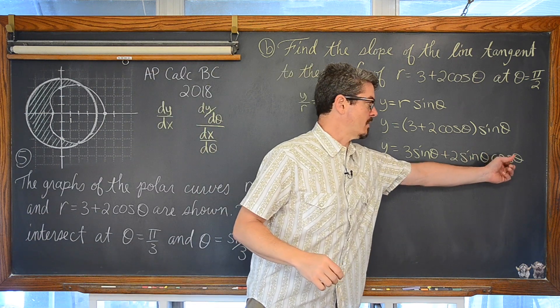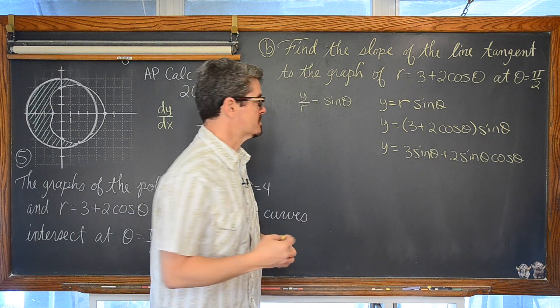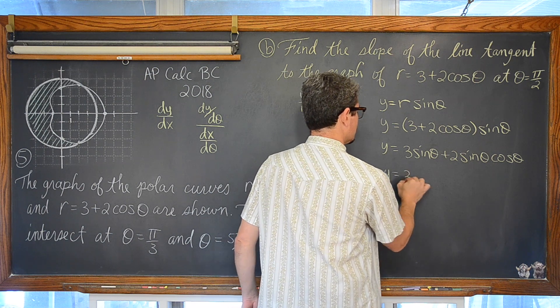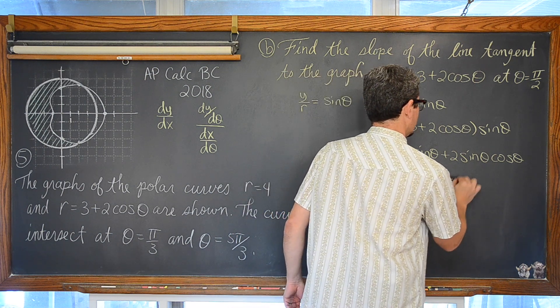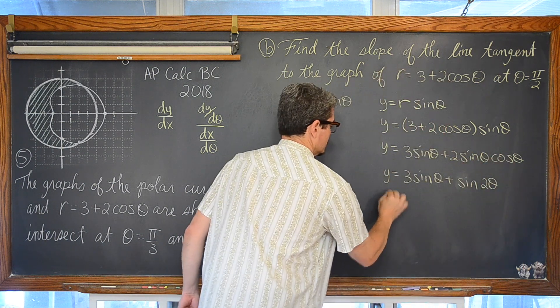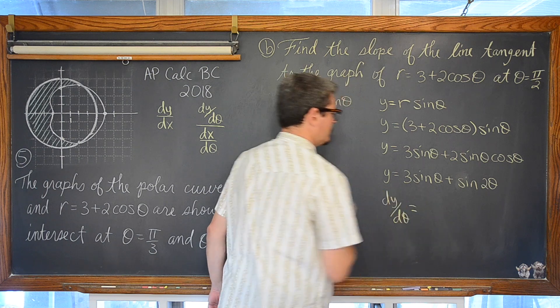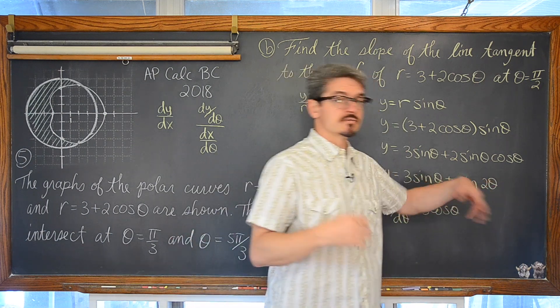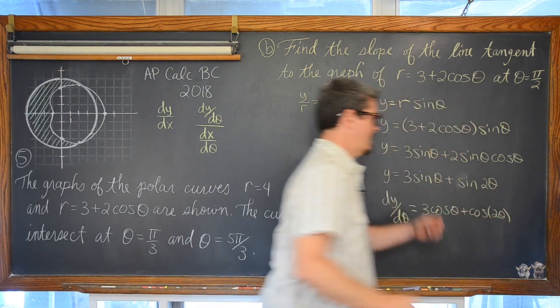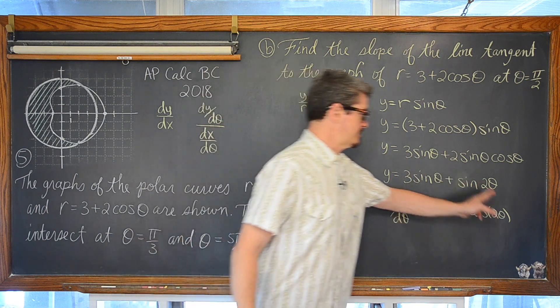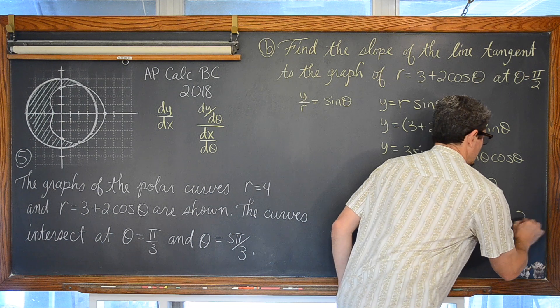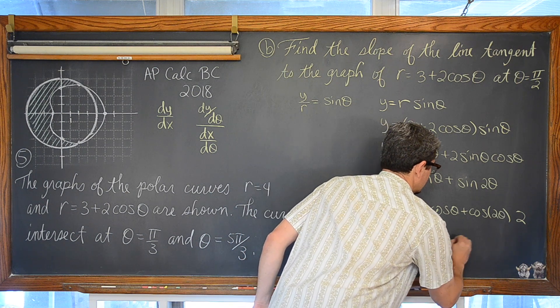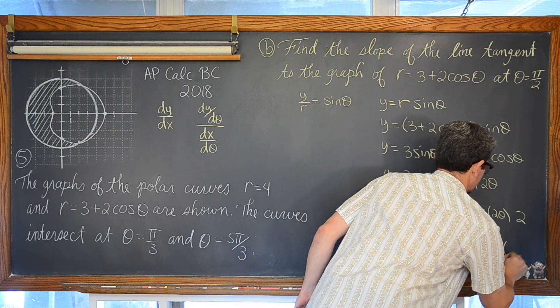We can go ahead and write that as a double angle identity so we don't have to use the product rule as we take a derivative. We have that y equals 3 sine of theta plus sine of 2 theta. Then dy/d-theta is equal to... I'm taking a derivative now. The derivative of sine is cosine, and the derivative of sine is cosine, but we have that inside function of 2 theta. The derivative of 2 theta with respect to theta is just going to be 2. So we have dy/d-theta equals 3 cosine of theta plus 2 cosine of 2 theta.